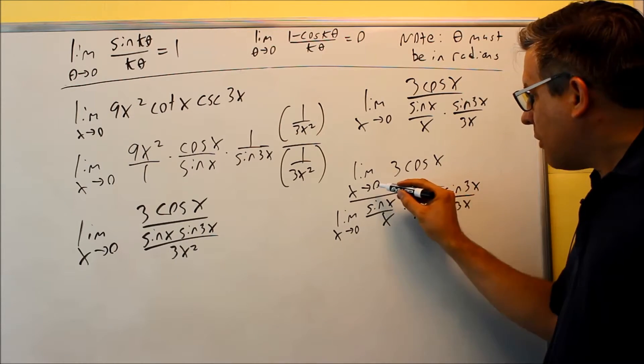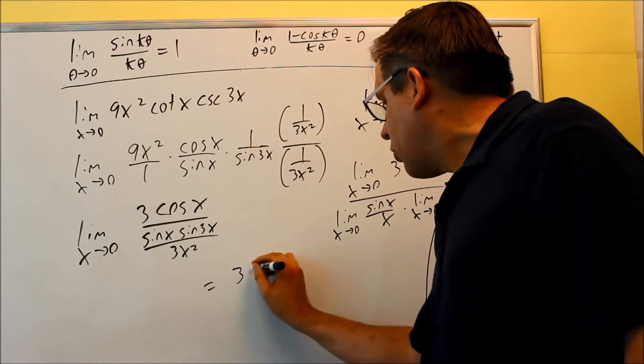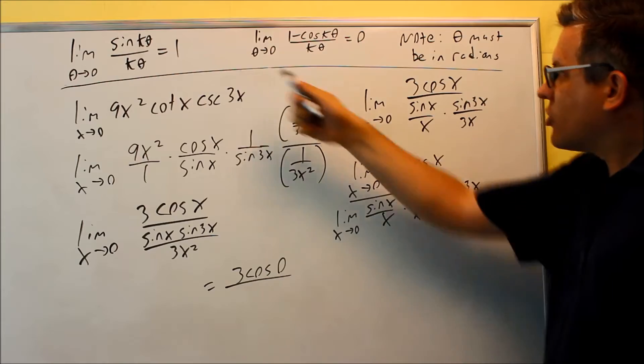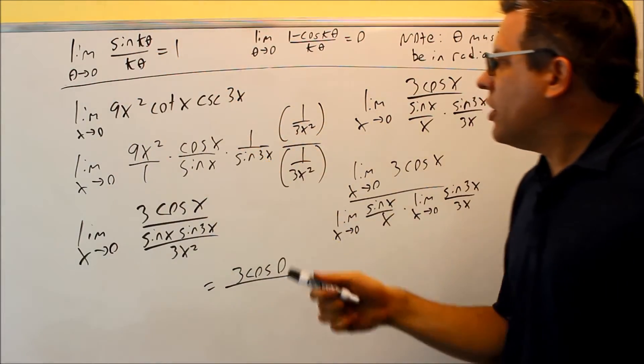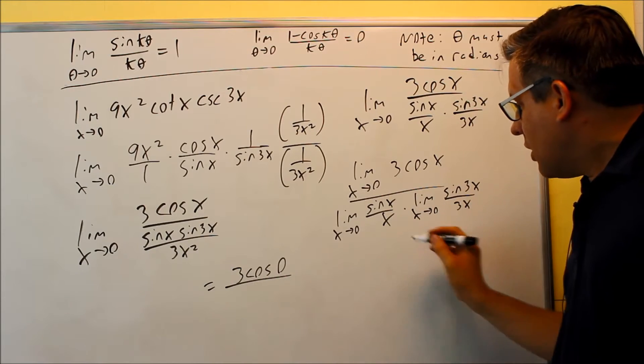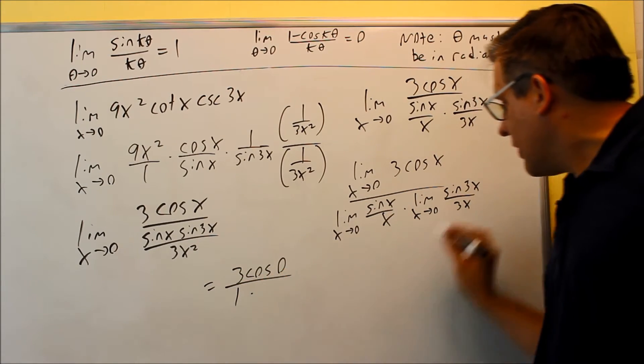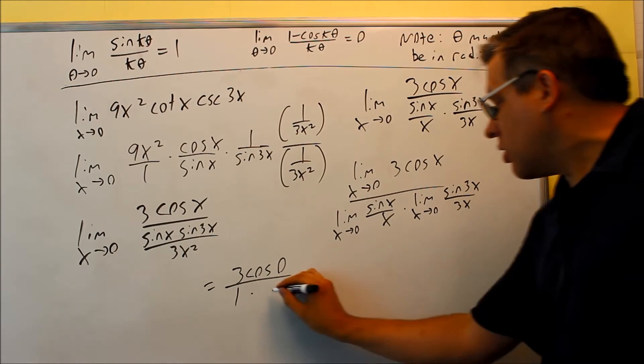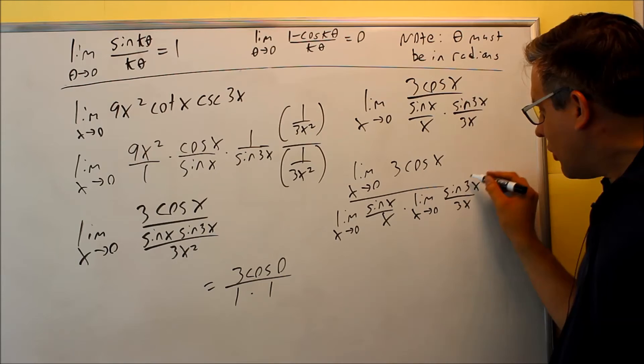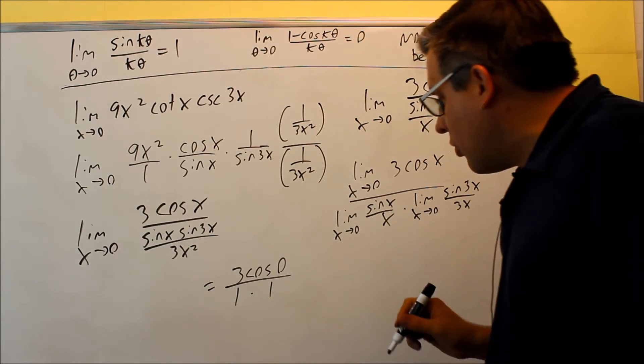Now I just have to find the limit of each of these things separately. Now the top one I'm just going to simply put 0 in there for x. So on top I'm going to get 3 cosine of 0. On the bottom these are both variations of this right here. Sine of k theta over k theta. So on the bottom I get a 1. That limit goes to 1. This one that's also going to go to a 1. It doesn't matter if you have constants on that. They're still going to go to 1 according to that principle.